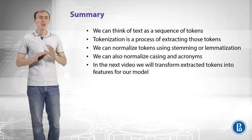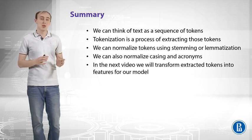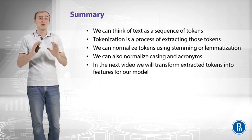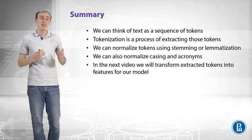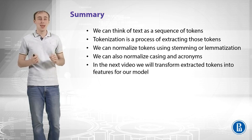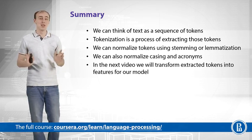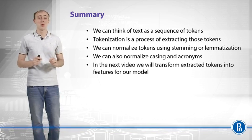Let's summarize. We can think of text as a sequence of tokens, and tokenization is the process of extracting those tokens — a token being a meaningful chunk of text like a word, sentence, or something bigger. We can normalize tokens using stemming or lemmatization, and you should try both to decide which works best. We can also normalize casing and acronyms. In the next video, we will transform extracted tokens into features for our model.